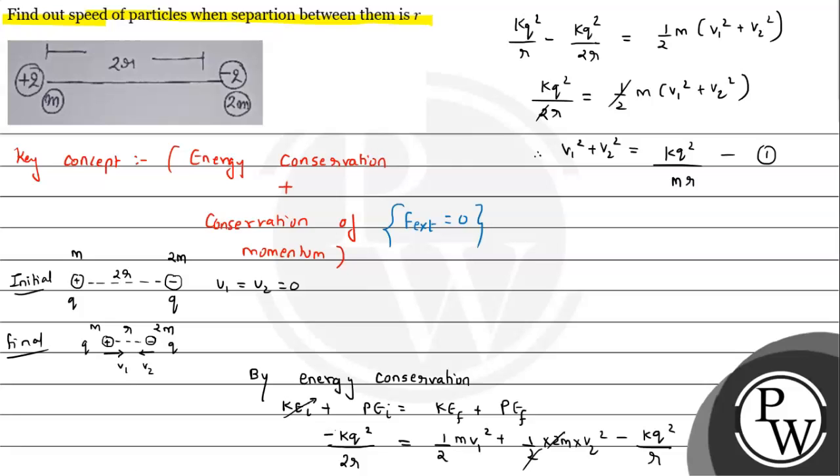By momentum conservation we can write: initial momentum of the system will be equal to final momentum of the system. Initial momentum is zero. Final momentum: m v1 minus 2m v2 equals zero, so m v1 equals 2m v2, giving v1 equals 2 v2.